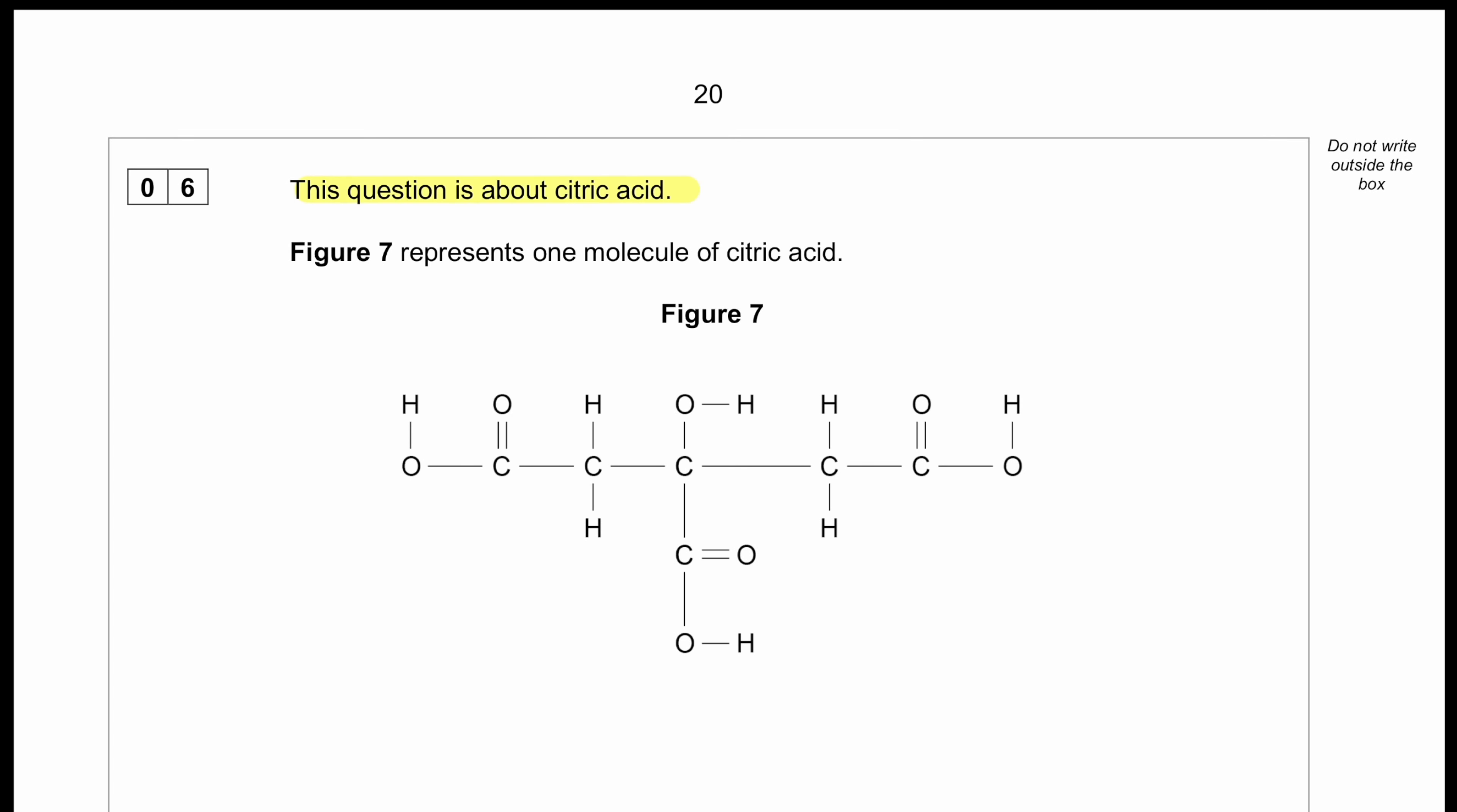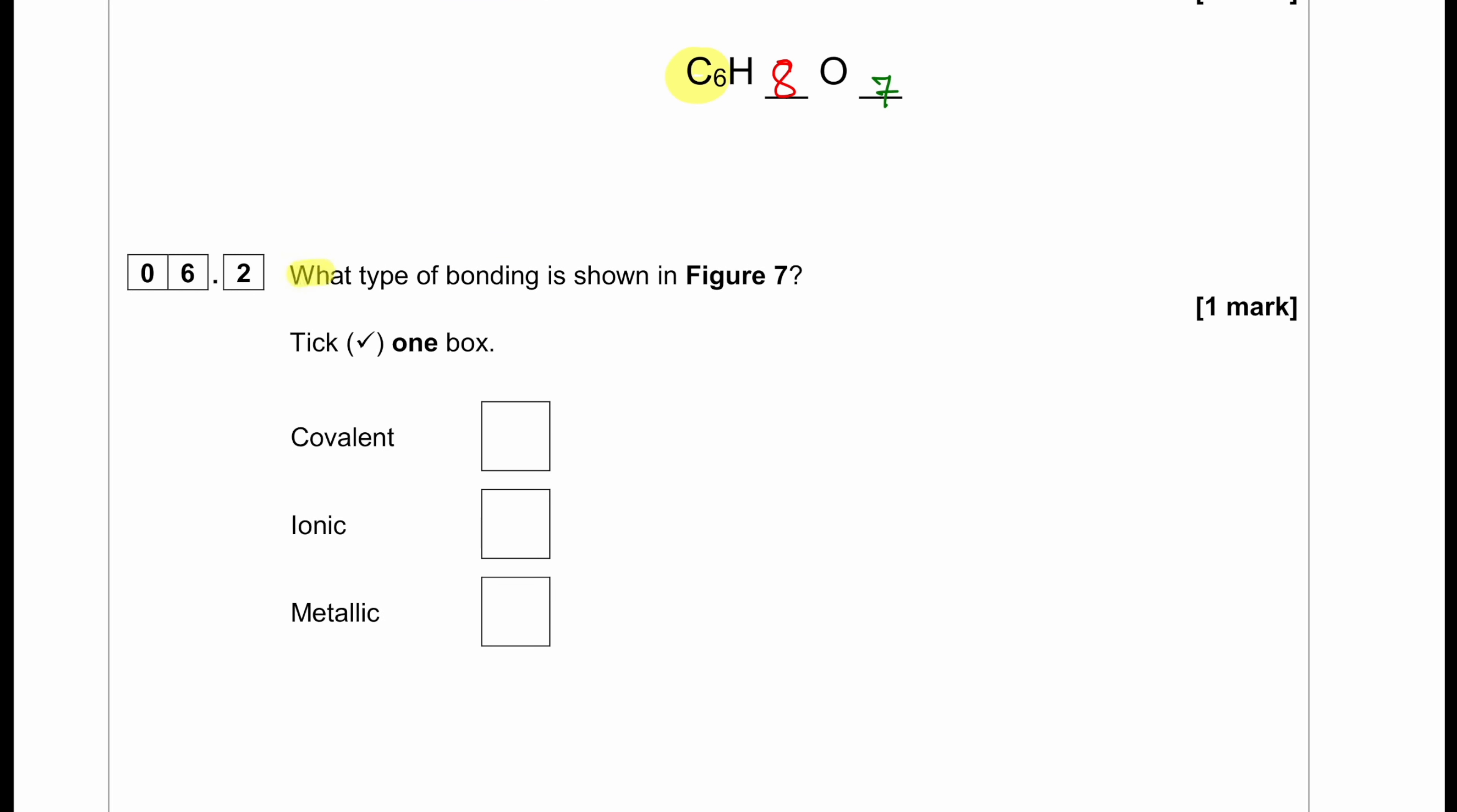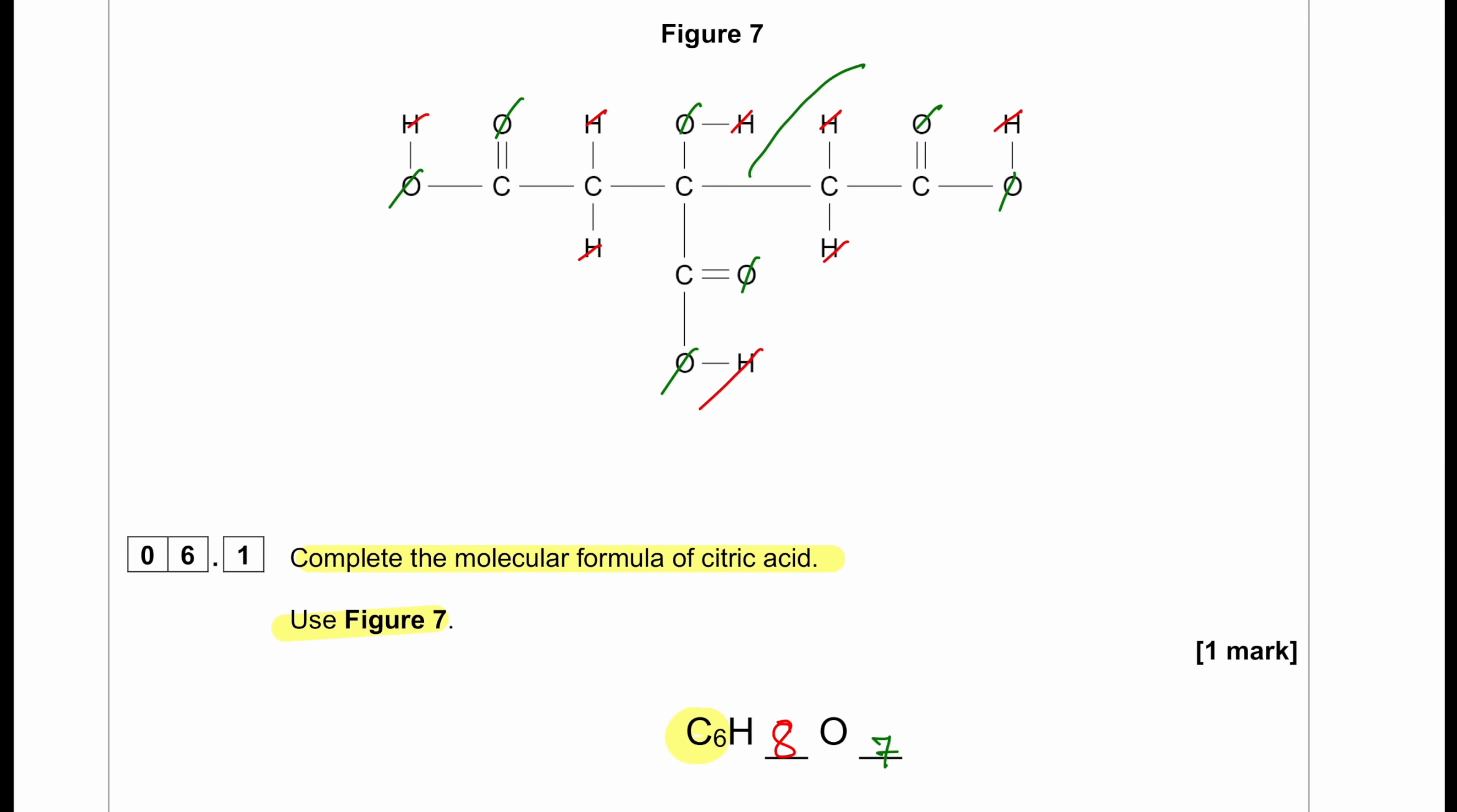This question is about citric acid. Figure 7 represents one molecule of citric acid. Complete the molecular formula of the citric acid. So the number of carbon is already counted. We need to count the number of hydrogen: 1, 2, 3, 4, 5, 6, 7, 8. So 8 hydrogen. And counting the number of oxygen: 1, 2, 3, 4, 5, 6, 7. So 7 oxygens. What type of bonding is shown in figure 7? The bonding shown with a dash represents a covalent bonding. So covalent.